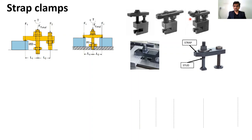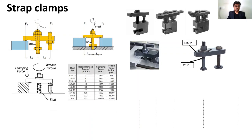This is another kind of strap, and we can design the straps according to our requirement. When we apply some torque and tighten the stud, the clamping force gets applied on the part. You can see a table showing the stud size, recommended torque — how much you should tighten the stud — the resulting clamping force, and the tensile force in the stud. This is based on the basic principle of leverage, so according to the position of the stud, the clamping force will vary.